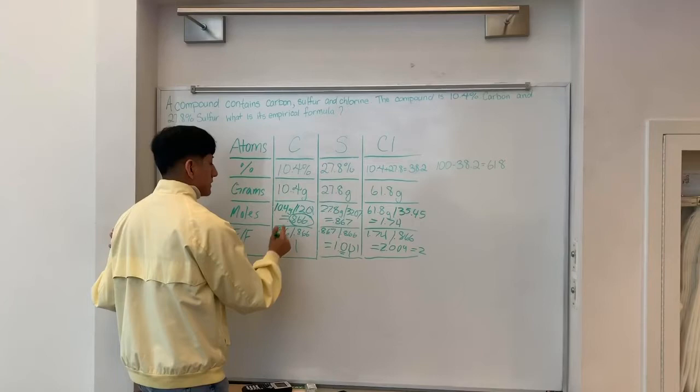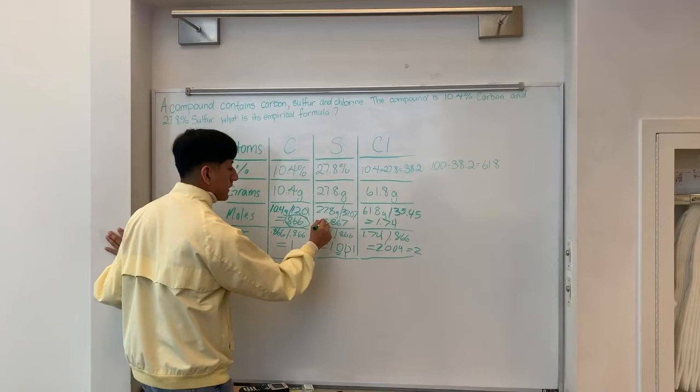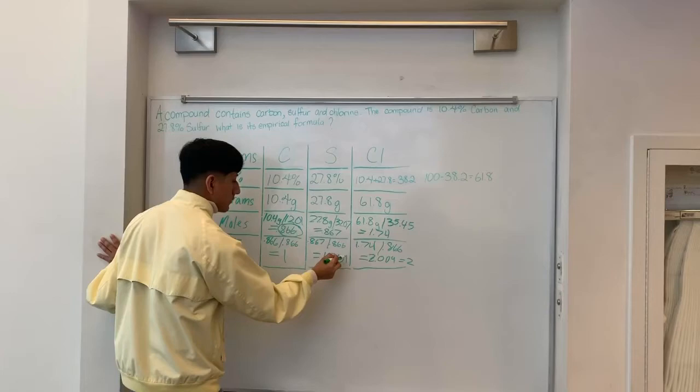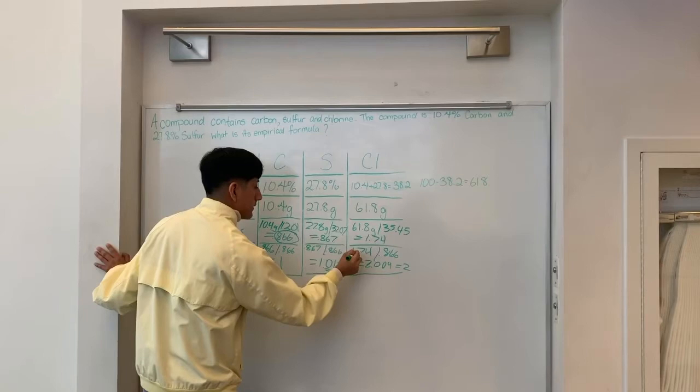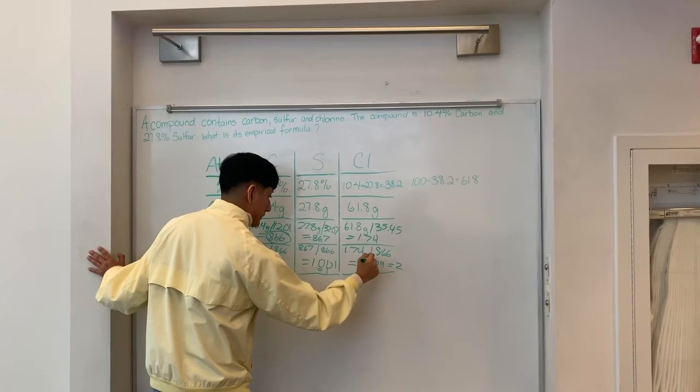So we take 0.866 divided by 0.866, and we get 1.001, which equals 1. Then 0.867 divided by 0.866, and 1.74 divided by 0.866, we get 2.009, which equals 2.